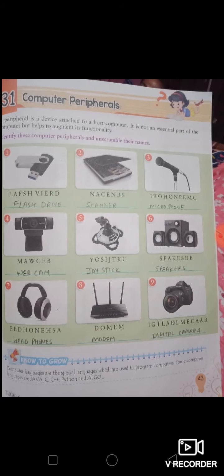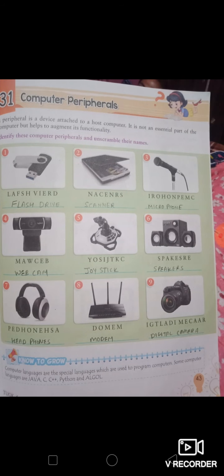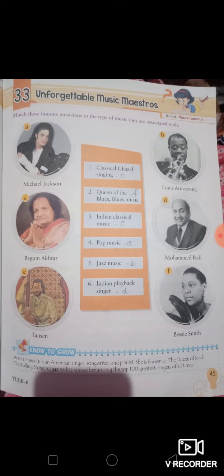Remember all the inventors and discoverers — it is a very important exercise. In the next exercise, some pictures are given and you have to rearrange the words to make the correct name for each picture. The items include flash drive, scanner, and microphone — these are all modern gadgets or computer peripheral devices. These questions will also be asked in the form of MCQs.